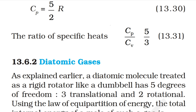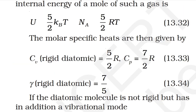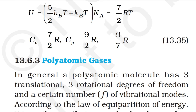Diatomic gas: a diatomic molecule treated as a rigid rotator has five degrees of freedom — three translational and two rotational. Using the law of equipartition of energy, the total internal energy of a mole is U = (5/2)kBT·NA = (5/2)RT. The molar specific heats are CV = (5/2)R, CP = (7/2)R, and γ = 7/5. If the diatomic molecule is not rigid but has an additional vibrational mode, then CV = (7/2)R, CP = (9/2)R, and γ = 9/7.